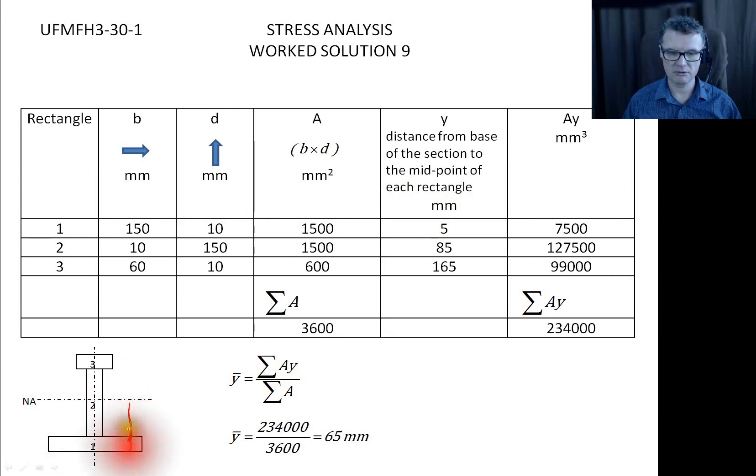Does it seem sensible? If 65 was up here, for example, then we know that we've gone wrong. And that's it.